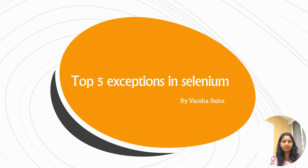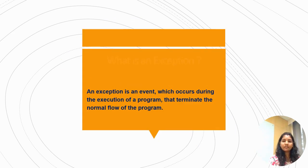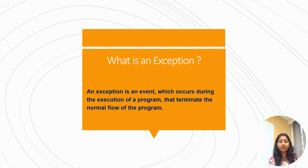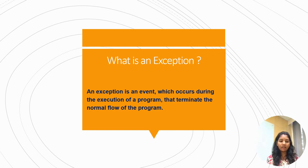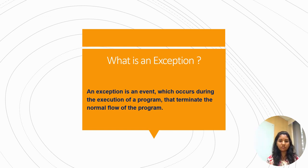Let's start with the top five exceptions in Java. First, what is an exception? An exception is an event which occurs during the execution of a program. Whenever you execute your program, an exception can occur and it terminates your normal flow of execution. This is what exceptions are — we have to handle them to avoid this abnormal behavior.